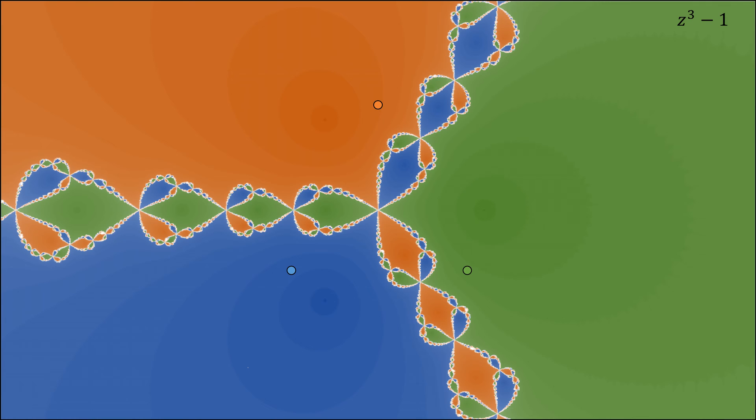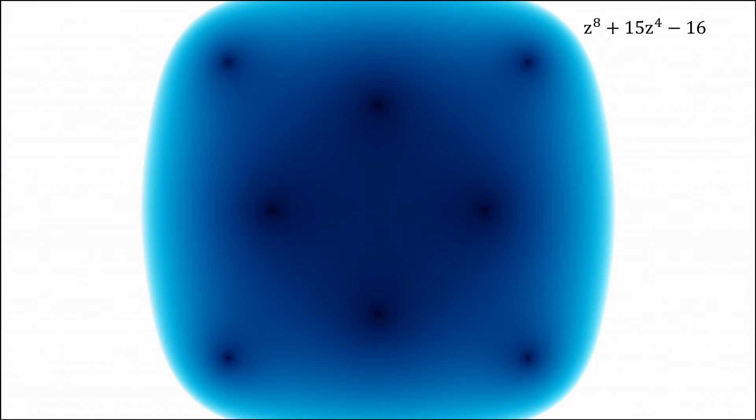The trouble comes when, well, let's just look at another example. This is a function z to the 8th plus 15 z to the 4th minus 16. In a Newton fractal, it looks like this. Let's recolor it depending on the root.